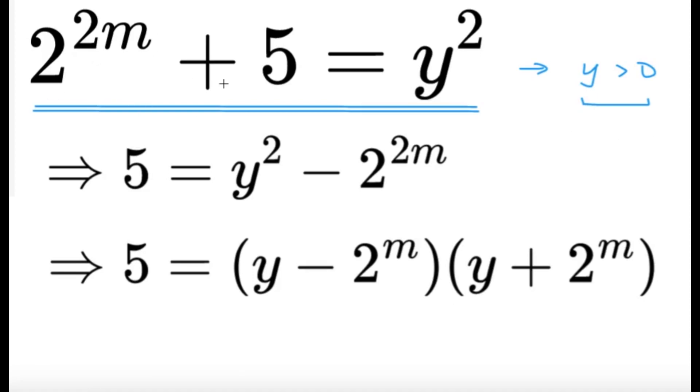So 2 raised to 2m plus 5 equals y squared. Technically, we're just going to solve for positive integers m and y in this part. So 5 is equal to y squared minus 2 raised to 2m. Now that's nice, because y squared and 2 raised to 2m, they're both perfect squares. Nicely factoring this difference of 2 squares into y minus 2 raised to m times y plus 2 raised to m.